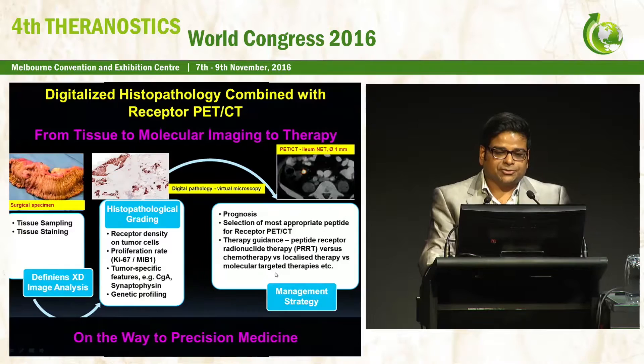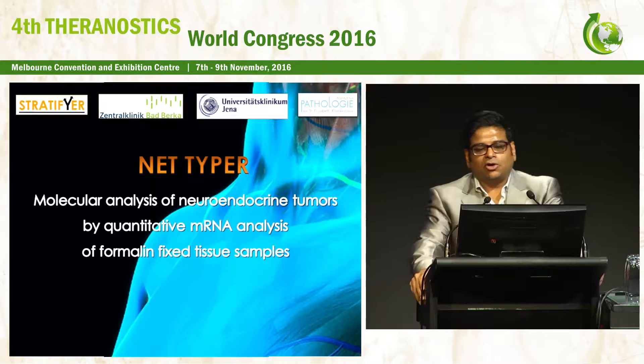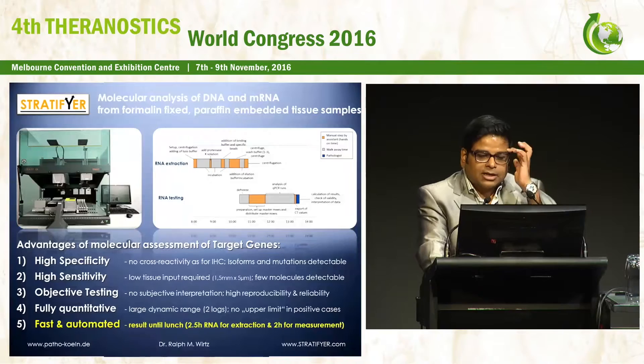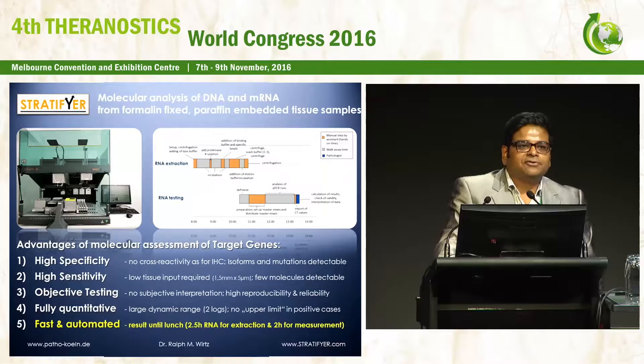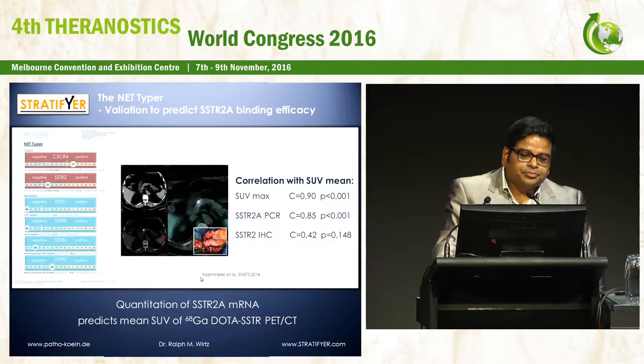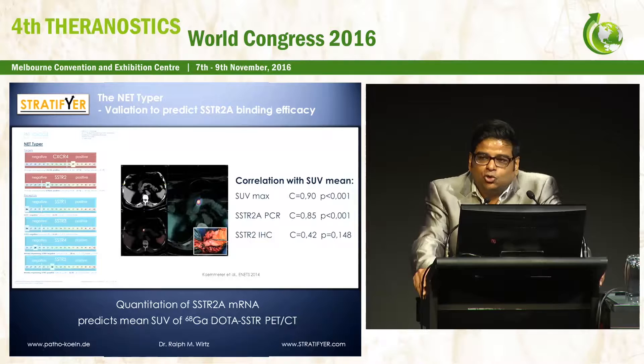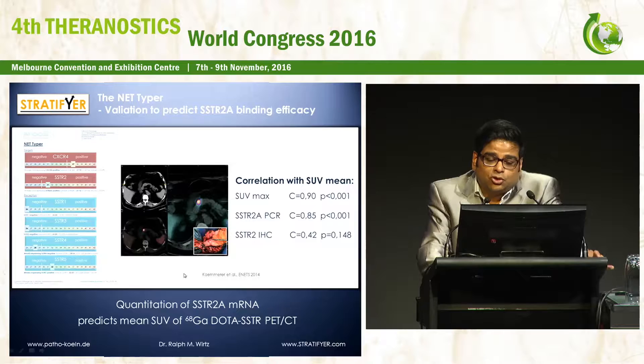One possibility of digitalized histopathology is to use the NET typer, which is a quantitative analysis of messenger RNA of tissue samples. It is a very fast and automated procedure allowing quick results for detection of messenger RNA somatostatin receptor status. In one case, the tumor had very high messenger RNA of SSTR2 and low CXCR4, and this analysis also correlated well with the SUVs on gallium receptor PET CT.